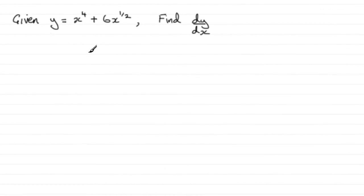Now in this part of the question we're given that y equals x to the power 4 plus 6x to the power half. We've got to find dy by dx in its simplest form.